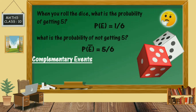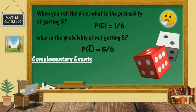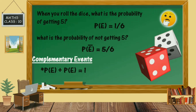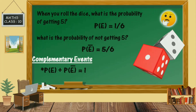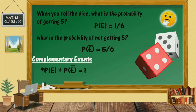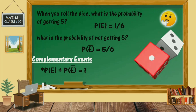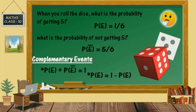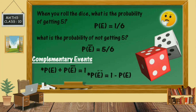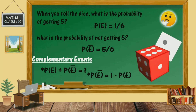Now, if you look here, probability of event E plus probability of event E bar equals 1. From this, P(E bar) equals 1 minus P(E). This is a very important result.